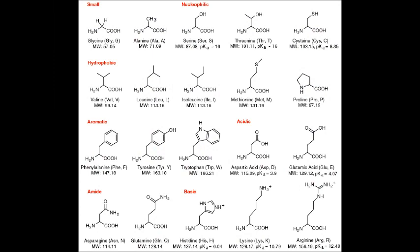What they should have said is that there are 20 amino acids involved in protein synthesis. These are glycine, alanine, serine, threonine, cysteine, valine, leucine, isoleucine, methionine, valine, proline, tyrosine, tryptophan, aspartic acid, glutamic acid, asparagine, glutamine, histidine, lysine, arginine.